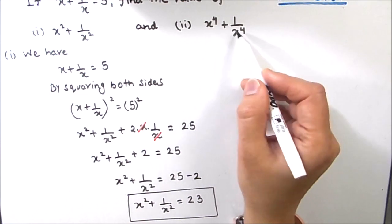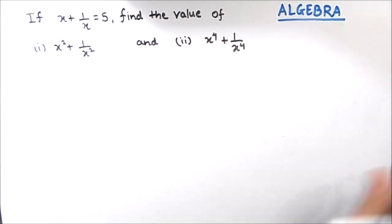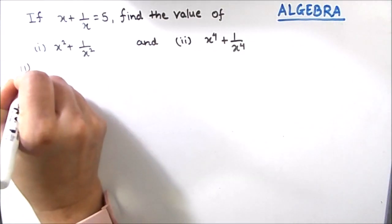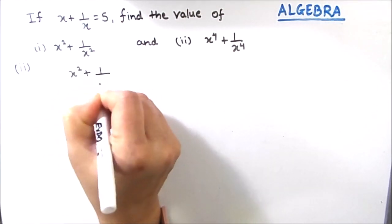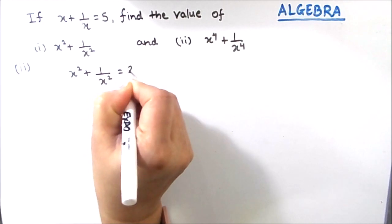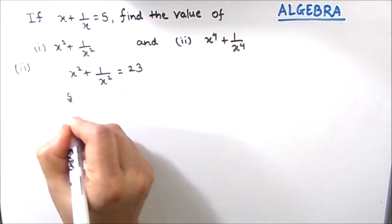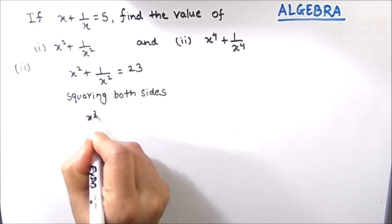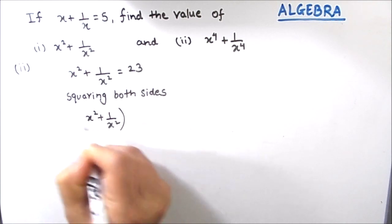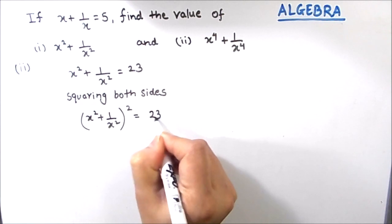For finding the value of the second expression, we are going to use the same method. For the solution of the second one, we will start from x squared plus 1 by x squared equals 23, which we already calculated. Now we will square both sides of this expression, giving x squared plus 1 by x squared whole square is equal to 23 whole square.